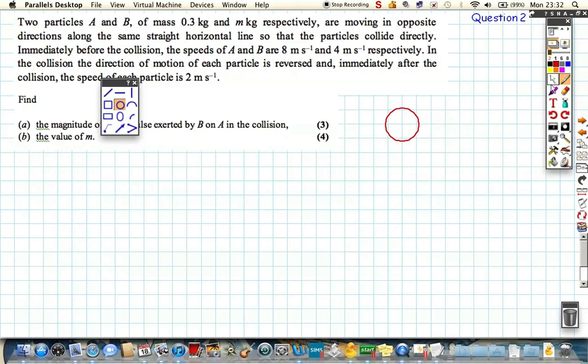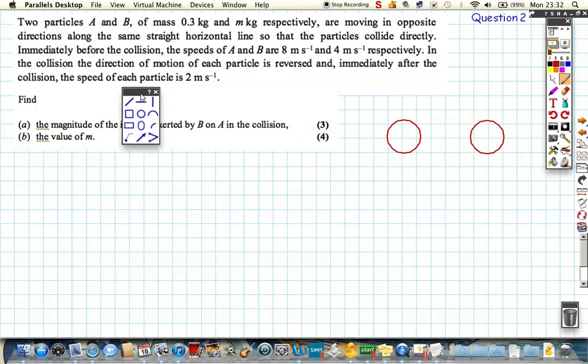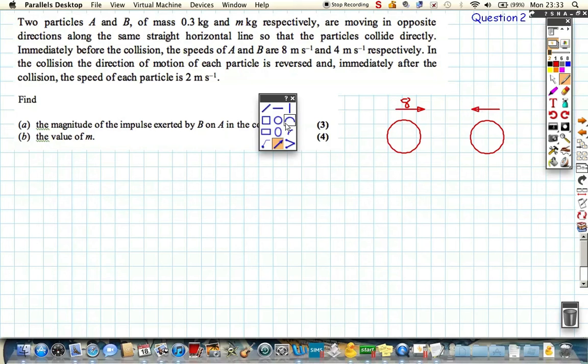So particle A and particle B. And what happens before: A is traveling this direction with 8, and B is traveling this direction with 4. In a collision, the particle of each is reversed. So A spins backwards and then ends up traveling this way. B ends up traveling backwards this way.